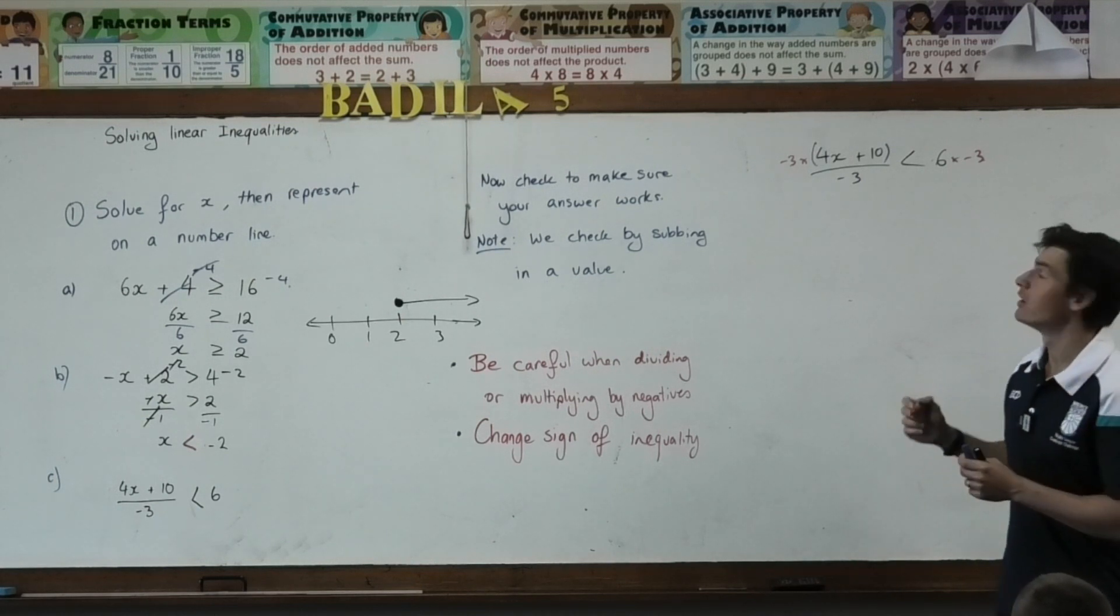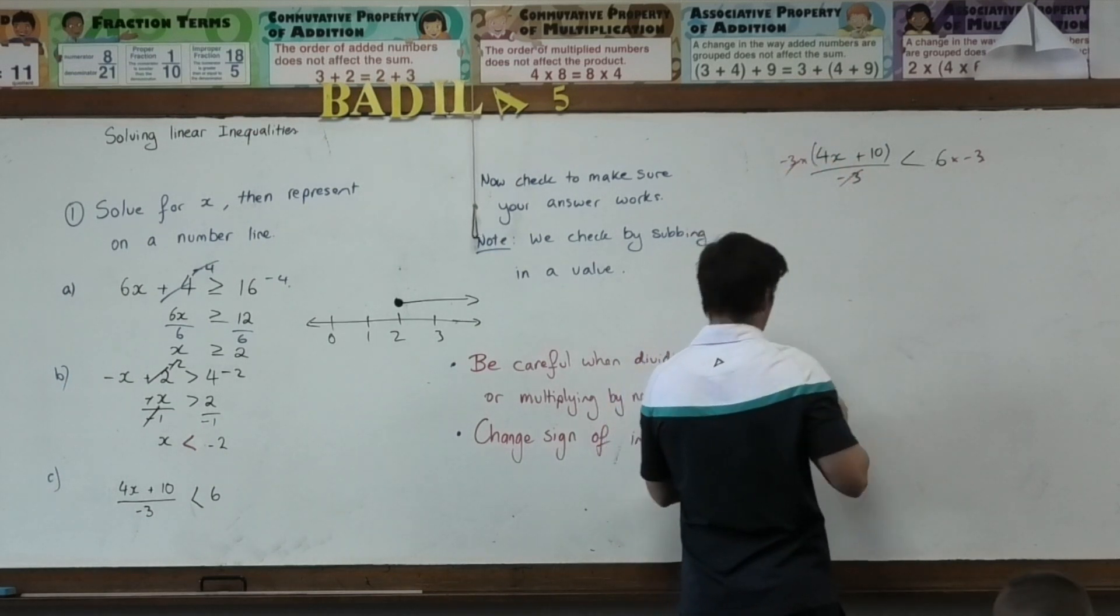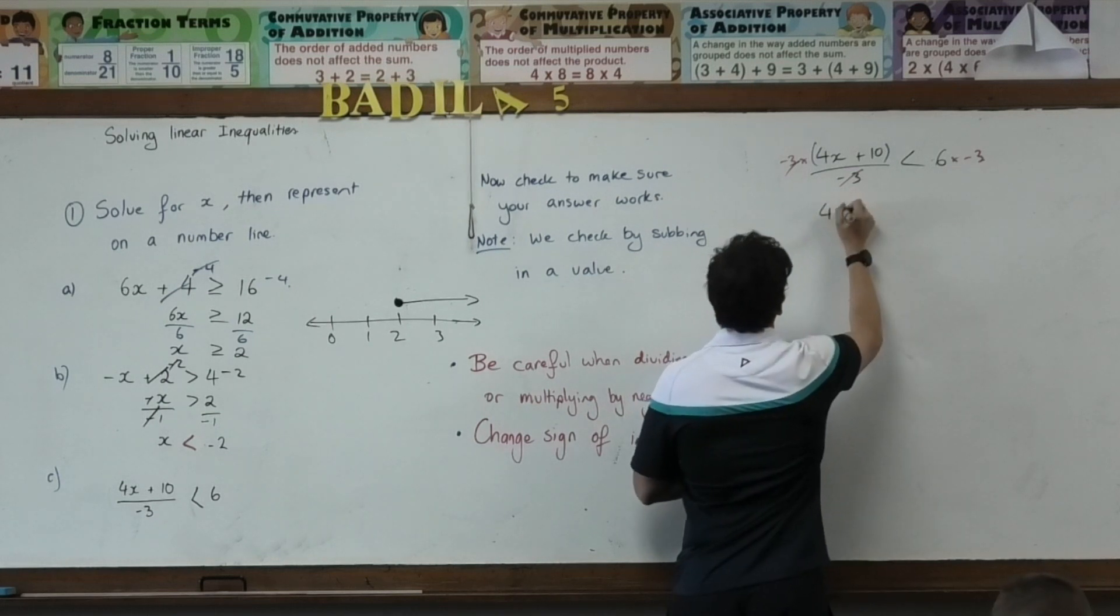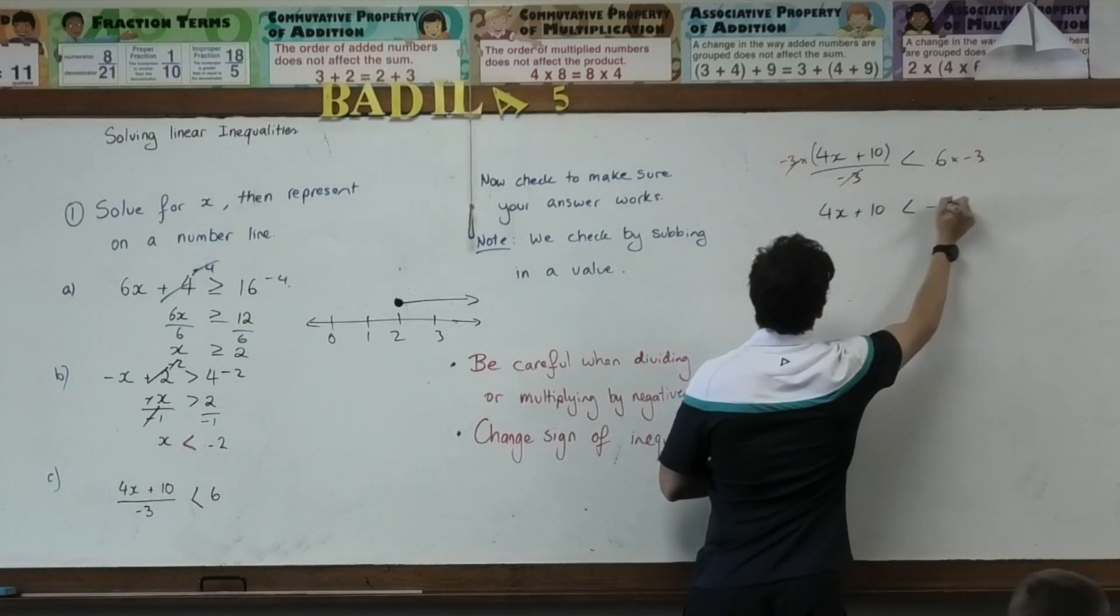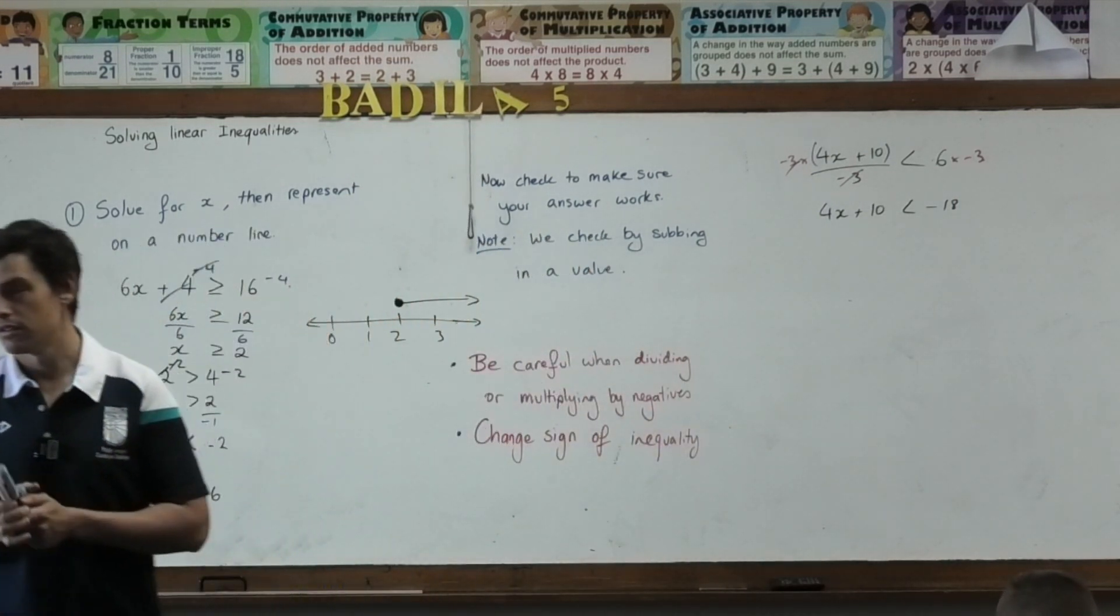They cancel each other out. Now, I'm left with four X. Do I need the brackets anymore? So, I've now got four X plus 10 is less than negative 18. Correct? Yes.